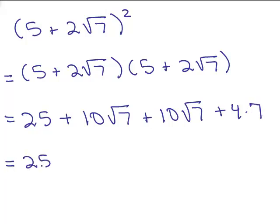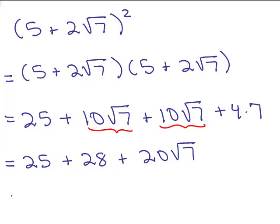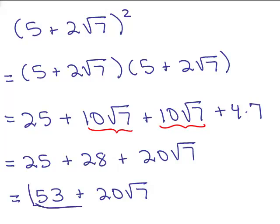So: 25 plus — looking at the end, 4 times 7 is 28. Then I combine the two middle terms since they both have square root of 7, so I add their coefficients: 20 square roots of 7. Any like terms I can add together? Yes, the 25 and the 28: that's 53 plus 20 square roots of 7. You have to know when to stop — you can't go any further because 53 is not a like term with square root of 7.